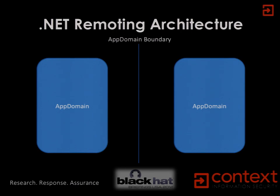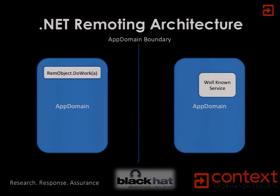Let's go into how .NET remoting actually works, because the first thing I'm going to look at is attacking remoting services. Remoting services has the concept of application domains — these are built into .NET, are fundamental .NET objects, part of the framework itself, and act as isolation mechanisms for objects. You cannot directly pass an object from one app domain to another without some other mechanism to achieve that feat.